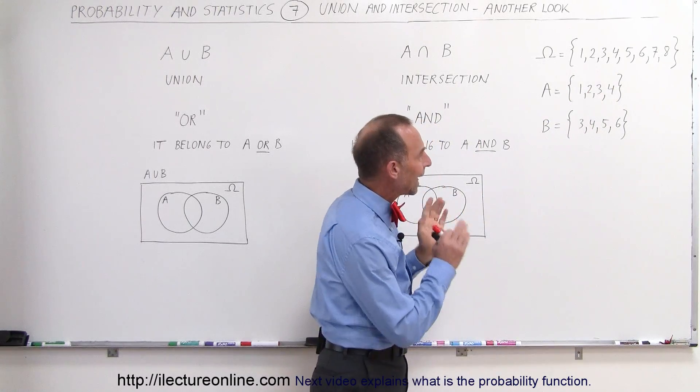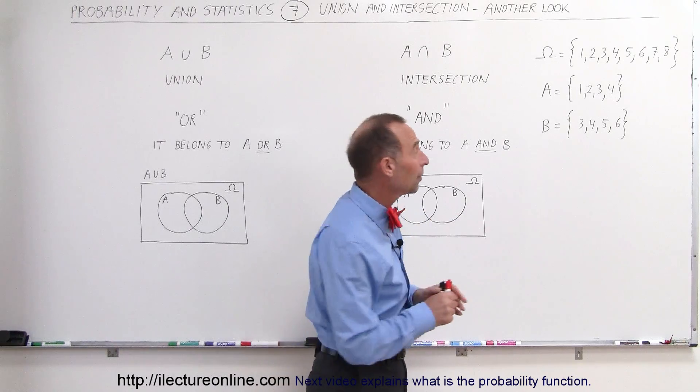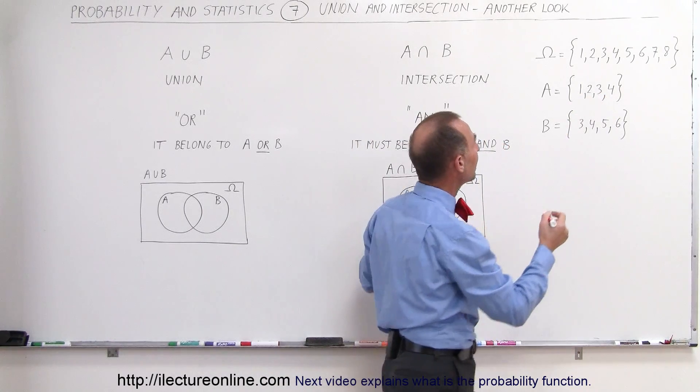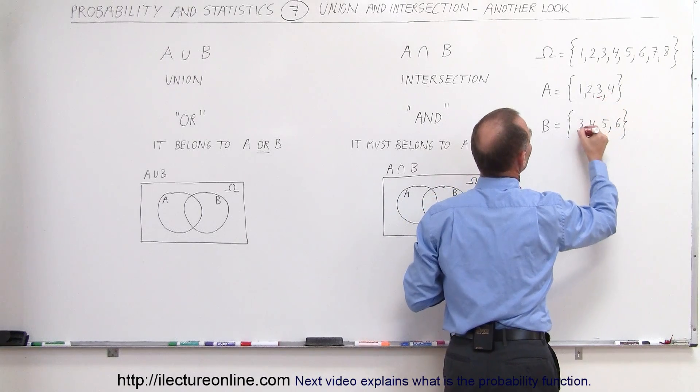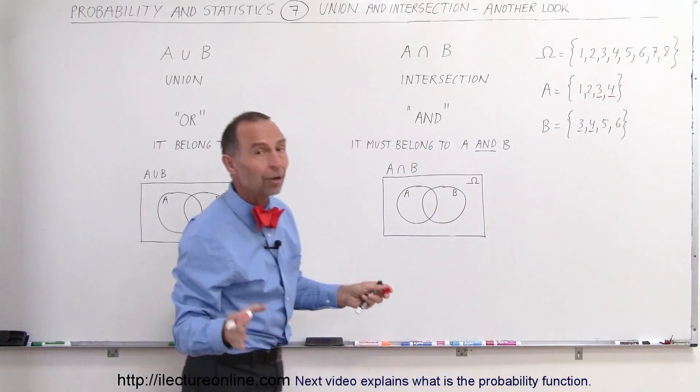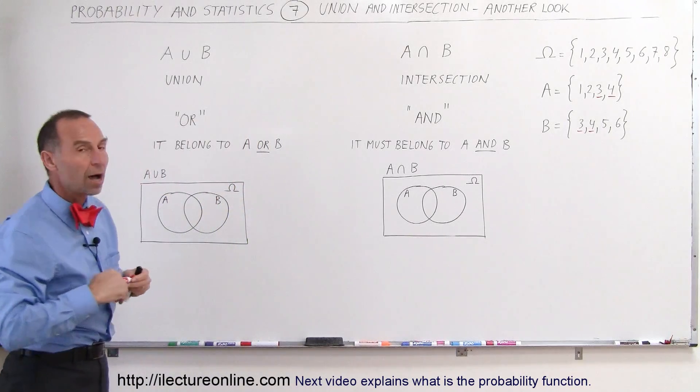And if you look carefully, A and B have some elements in common. These are also known as elements, and notice that in the case of A and B, the element 3 is common, and the element 4 is common. So they're not independent, they are dependent, because they have some common elements.